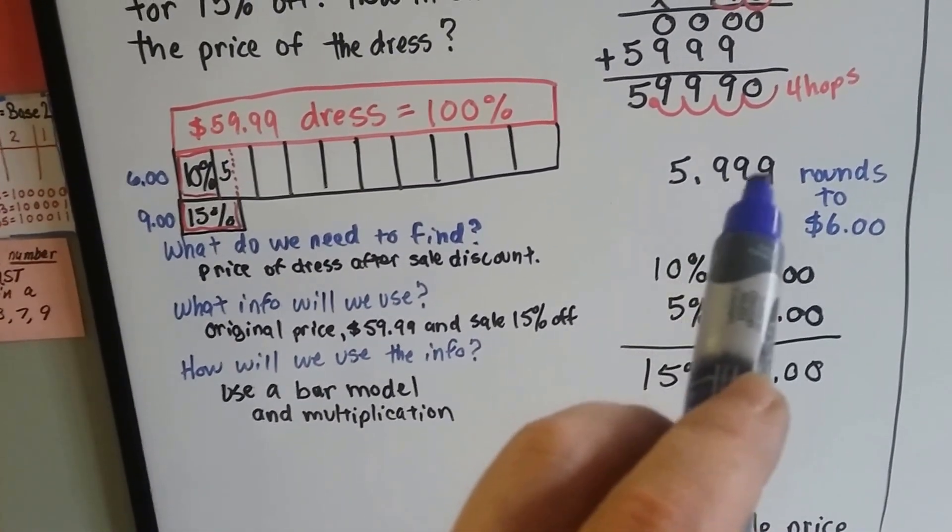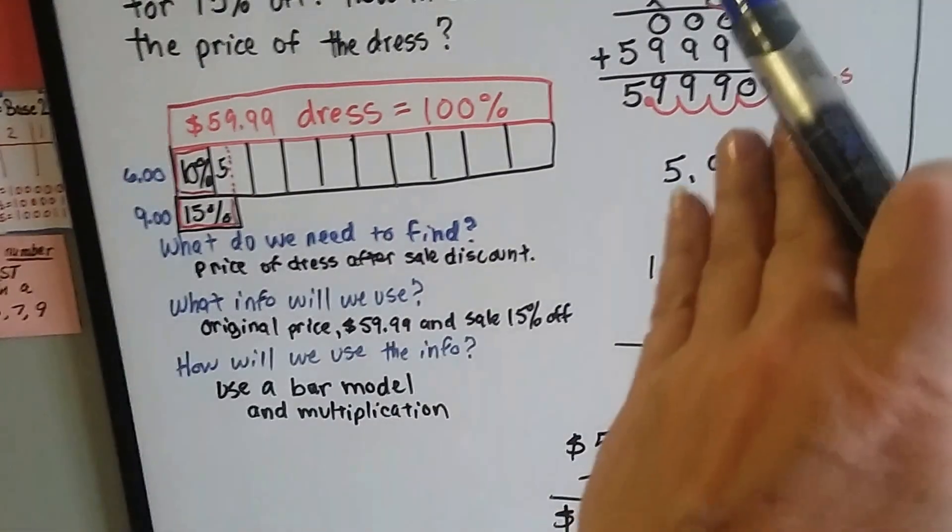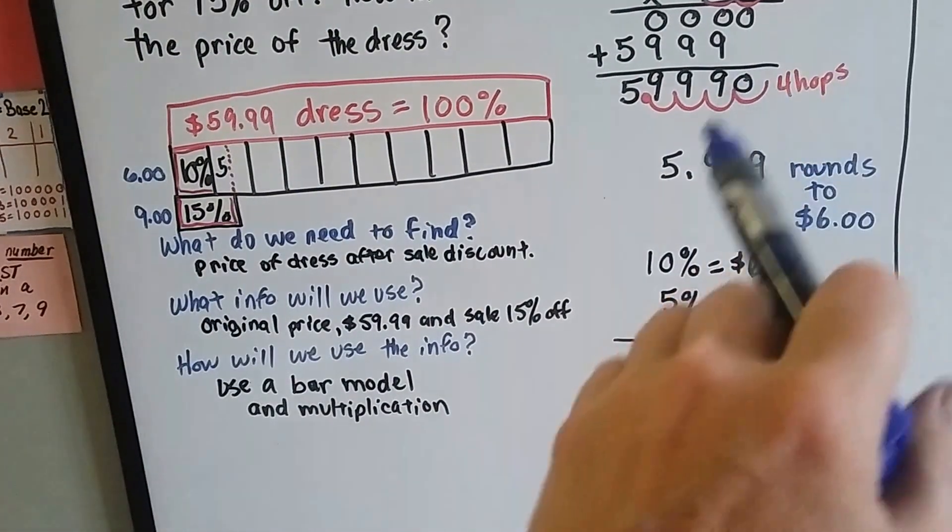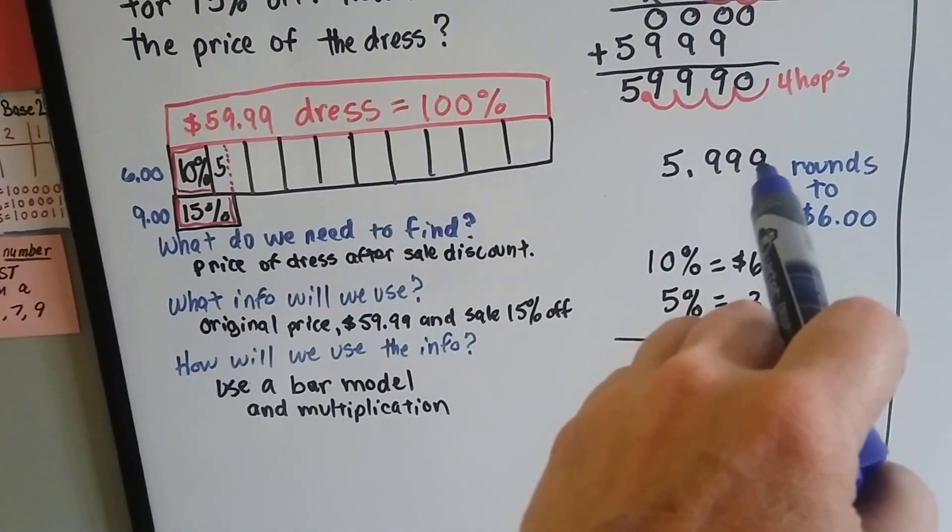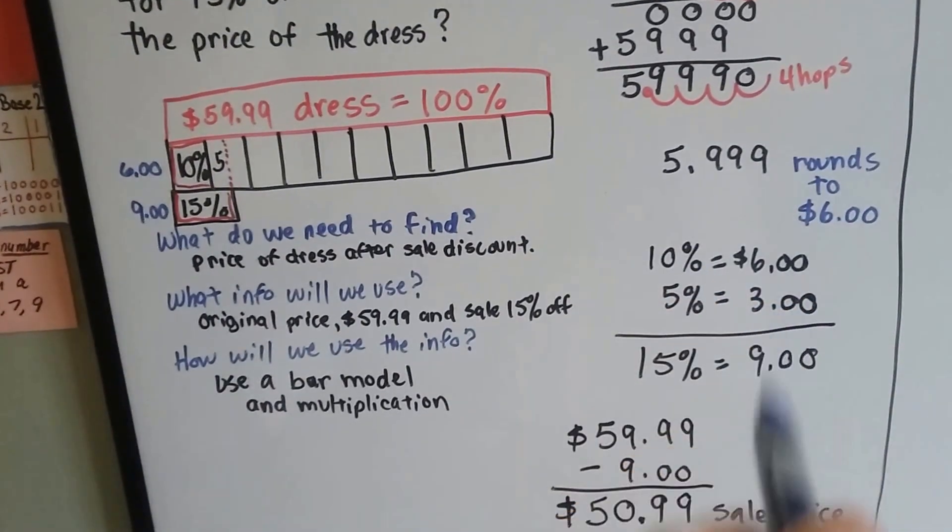Usually stores, when it's $9.99, they can't charge you that extra percentage of a penny, so they just round up to $6.